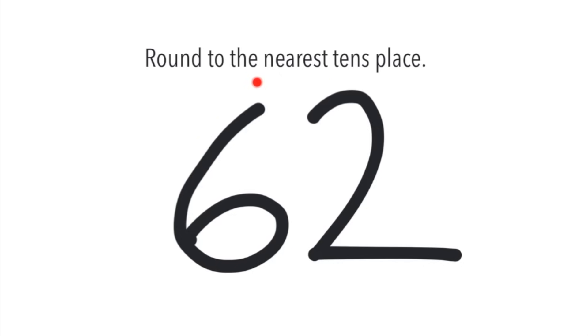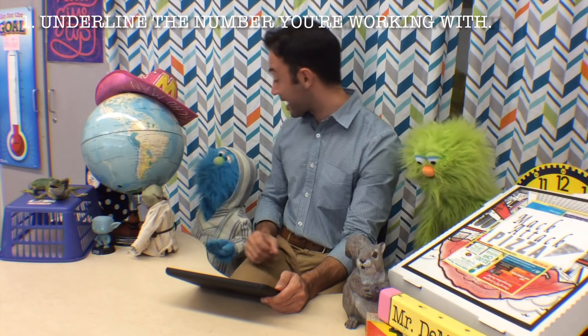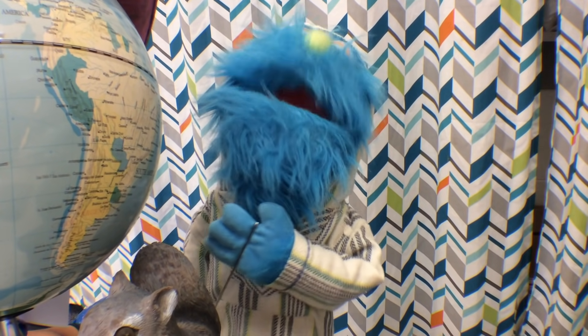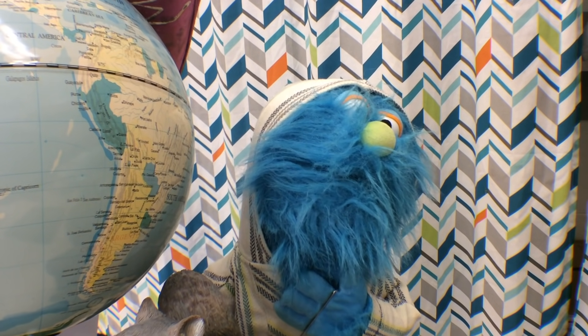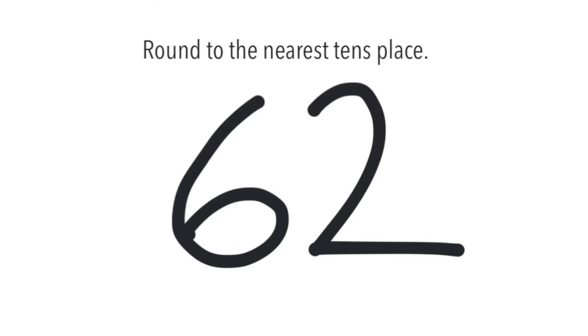What does place value have to do with rounding? It's all in the directions of the problems you're reading. Take a look at this problem — the number is 62. The directions say round to the nearest 10's place. What number is in the 10's place? The 6. The first step is to underline the number you're working with. So if it says round to the nearest 10's place, what number should we underline? The 6. Correct.